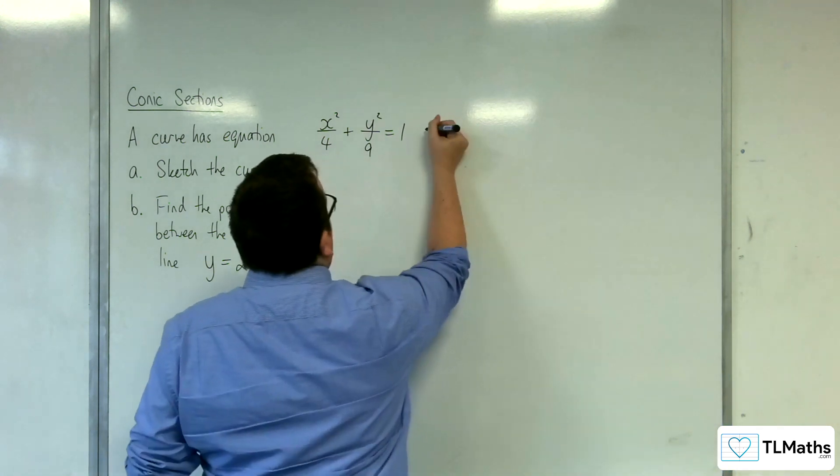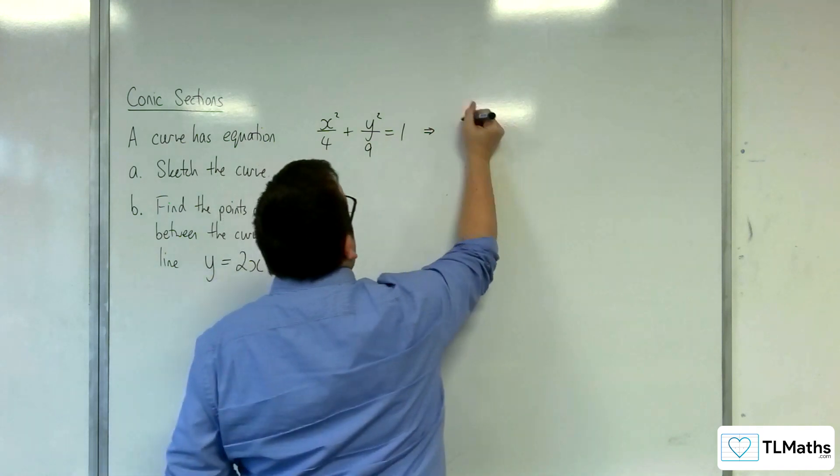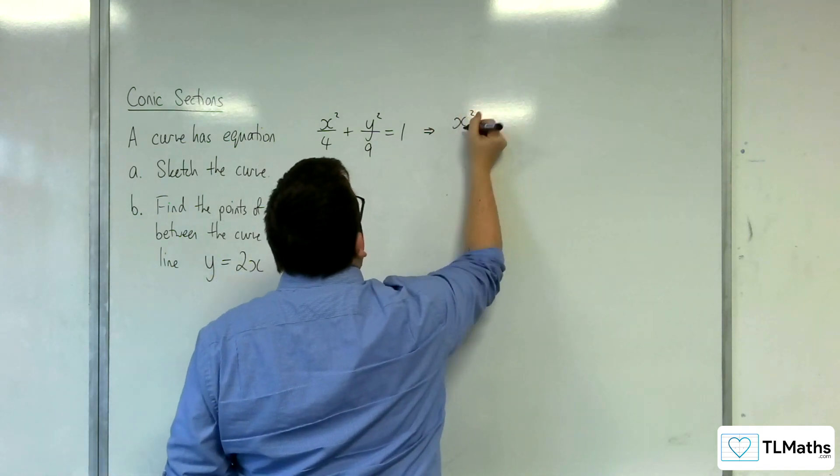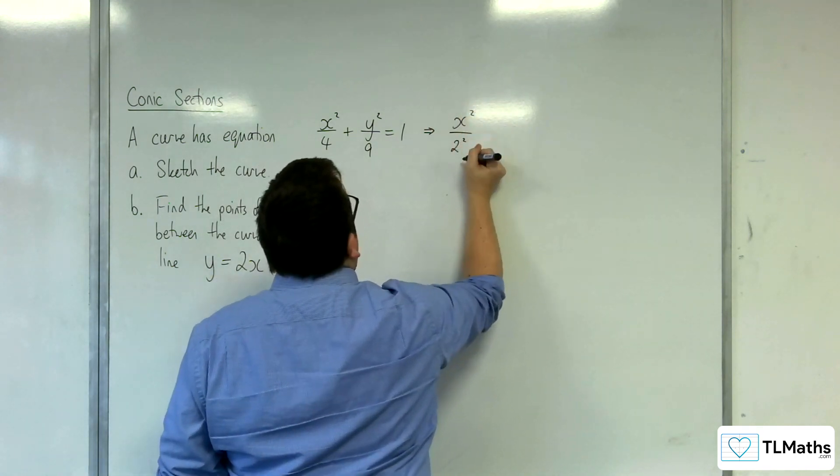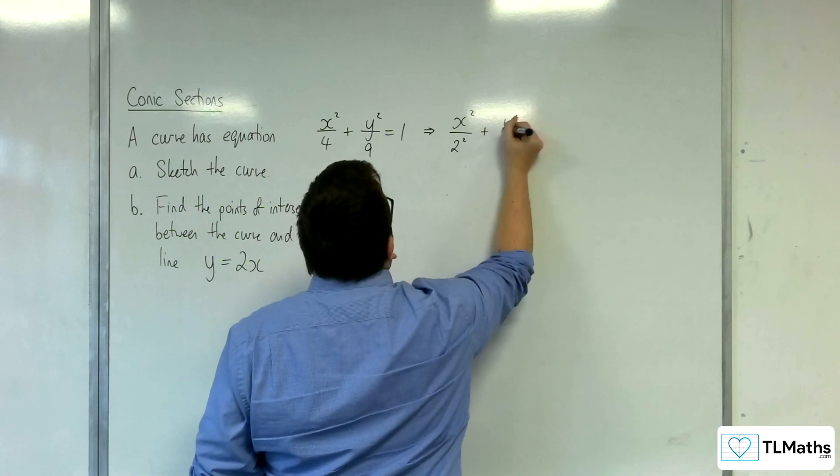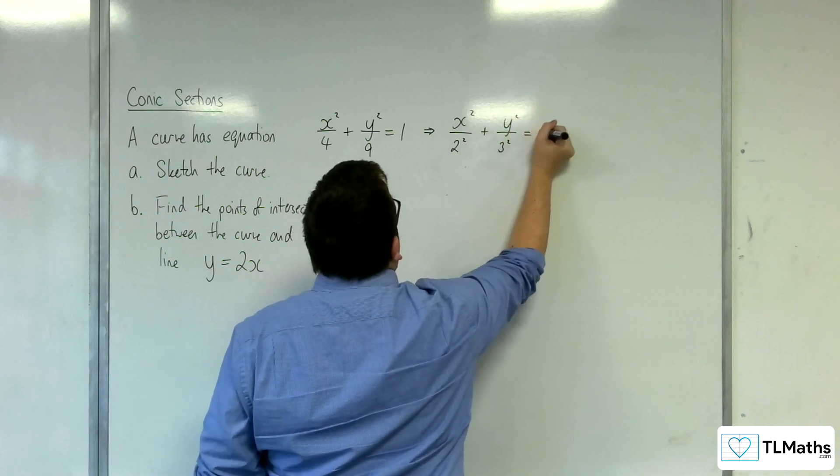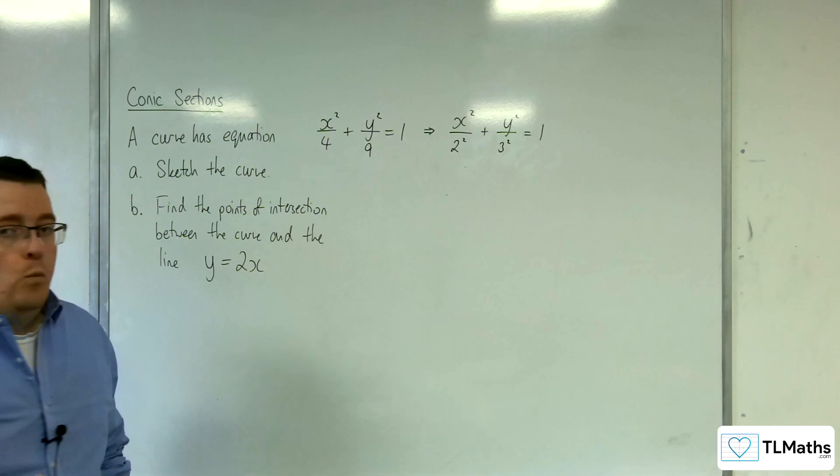So you probably want to be thinking about this, writing it in the form of x squared over 2 squared plus y squared over 3 squared equals 1. And then that way,